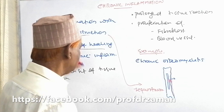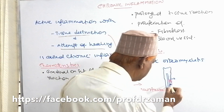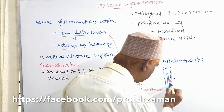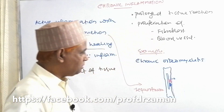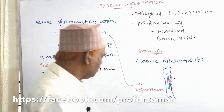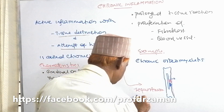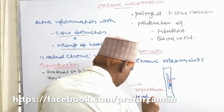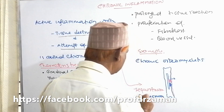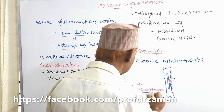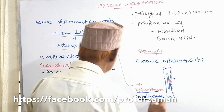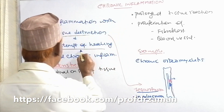Attempt of healing: there is formation of new bone with the help of periosteum, and this new bone is called involucrum. So sequestrum is an example of tissue destruction, and involucrum — new bone formation — is an example of attempt of healing.